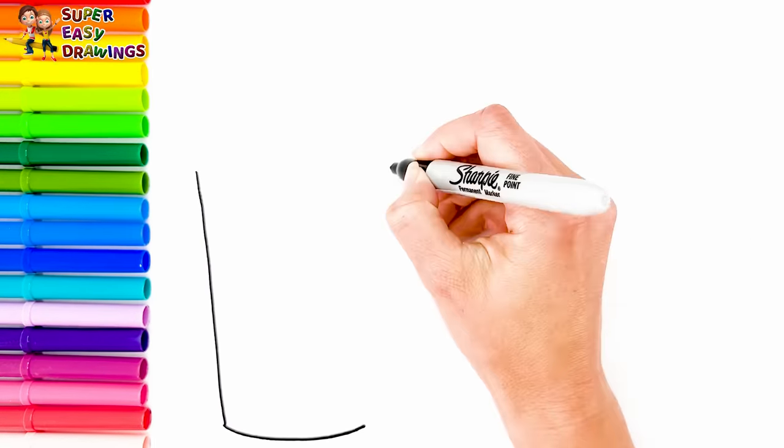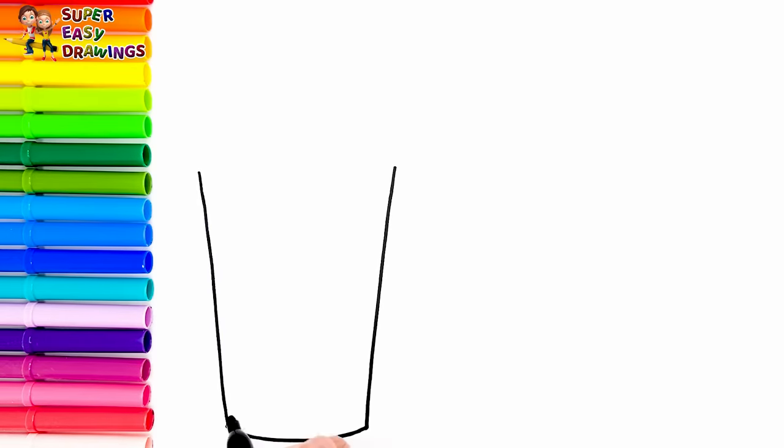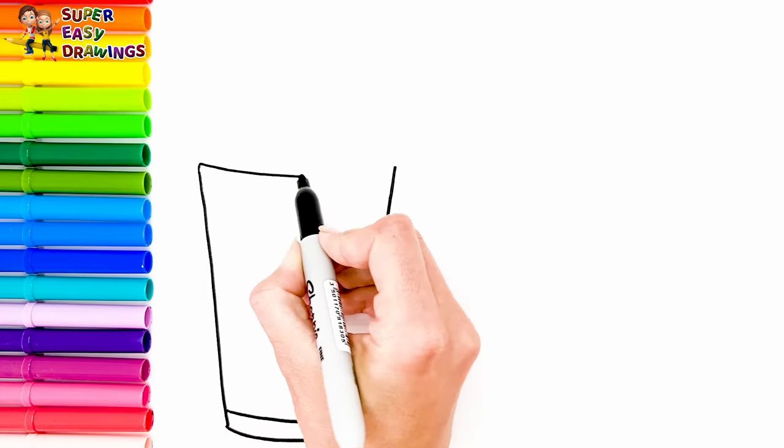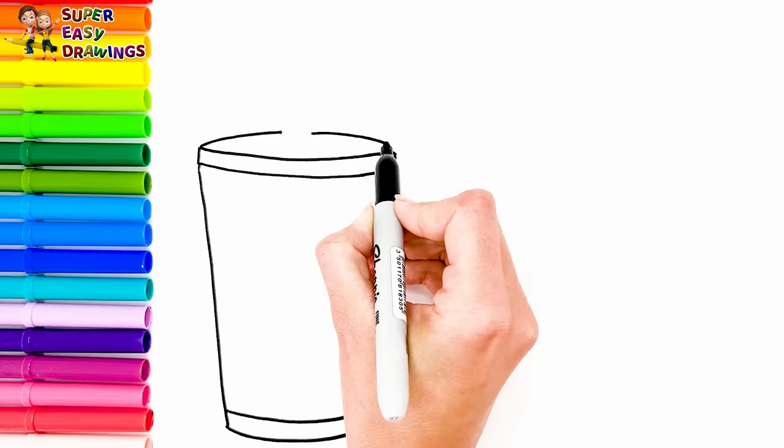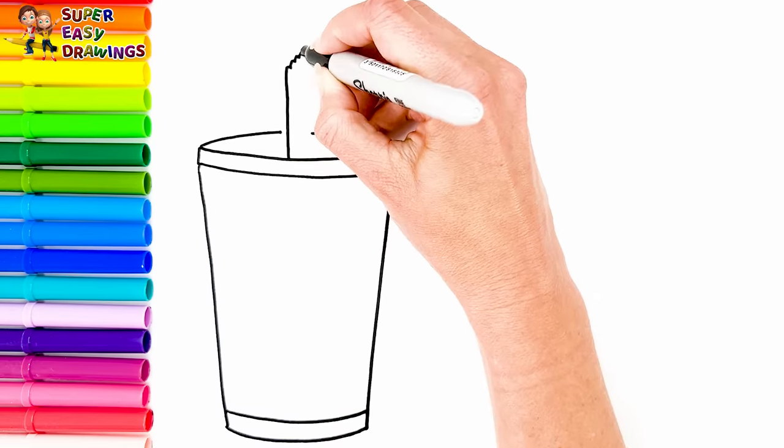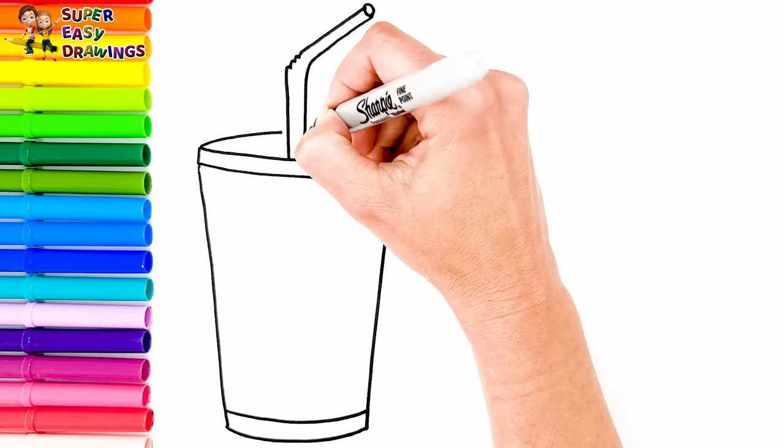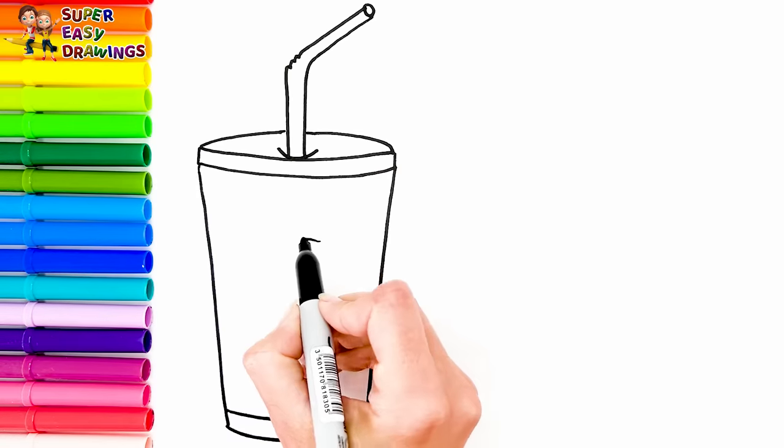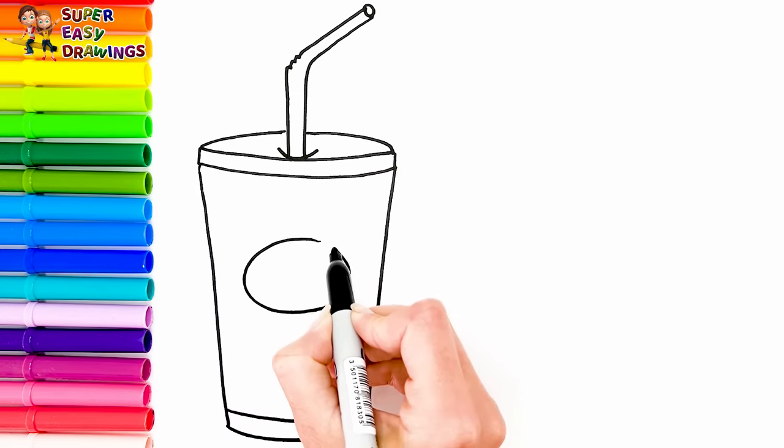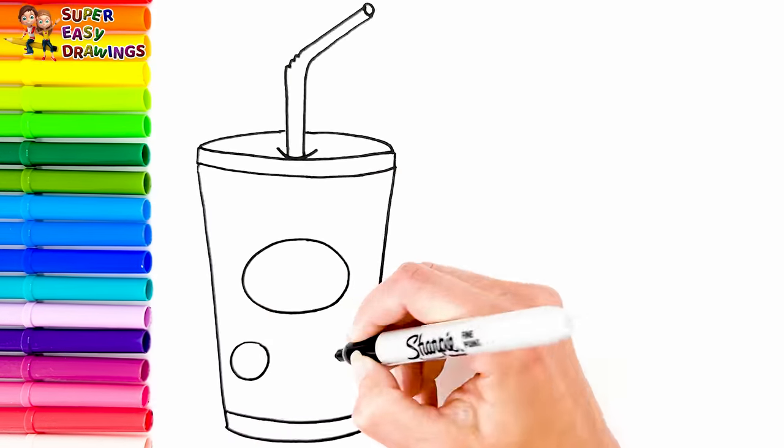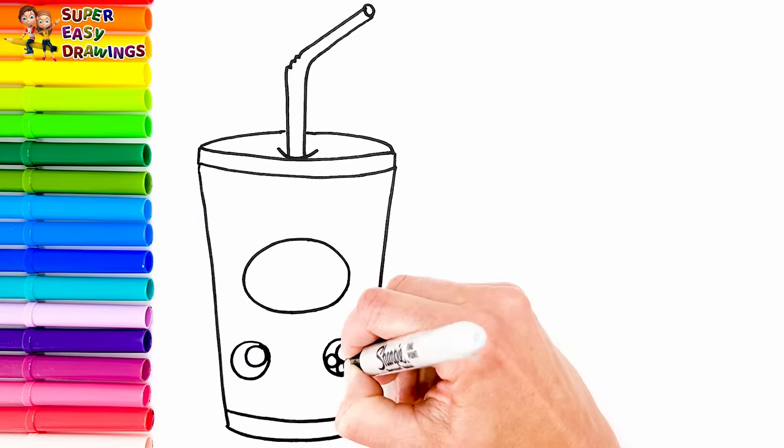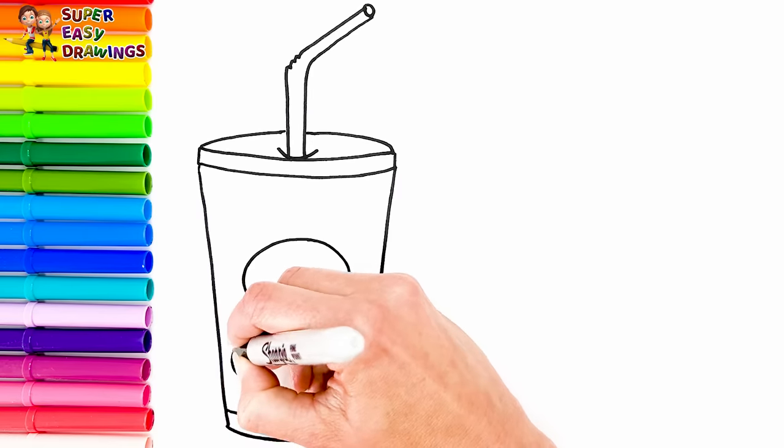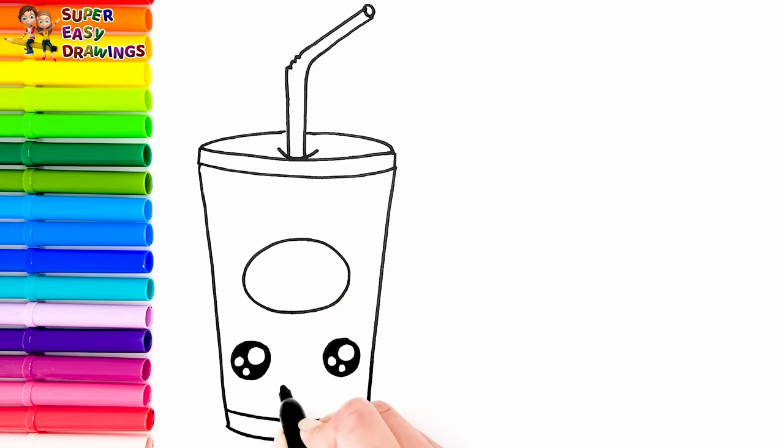I start with a paper cup. Then the top and finally a straw. Let's decorate it like this. Drawing its eyes. Now I draw his mouth.